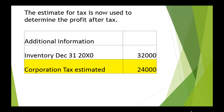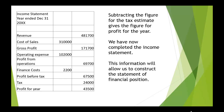We've got an estimate for our corporation tax of 24,000. We subtract the 24,000 from the profit before tax, leaving us with a profit for the year of 43,500. And that's our completed income statement.